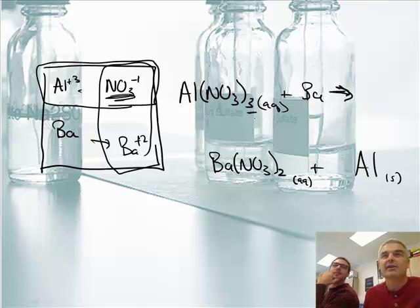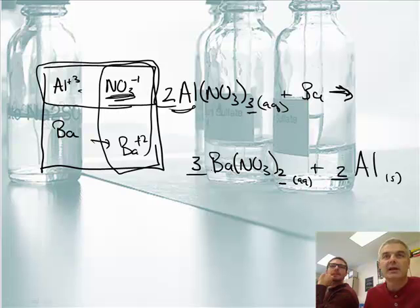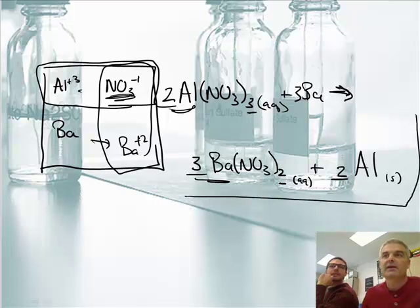Now let's balance it. Our nitrate has a three on the reactant side and a two on the product side, so I go to six. That makes a coefficient of two in front of Al(NO₃)₃ and three in front of Ba(NO₃)₂. Two aluminums means I put a two in front of Al on the product side. Three bariums means I put a three in front of Ba on the reactant side. That's the balanced equation.